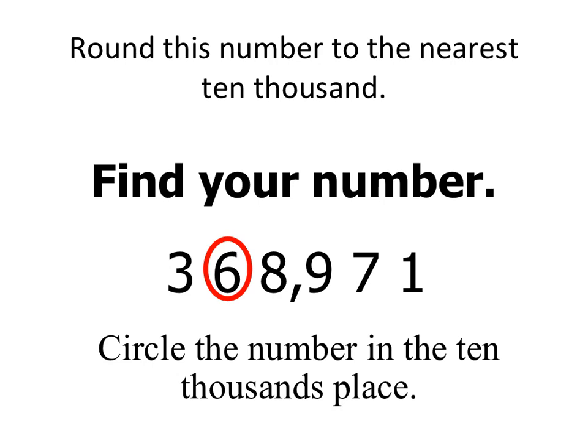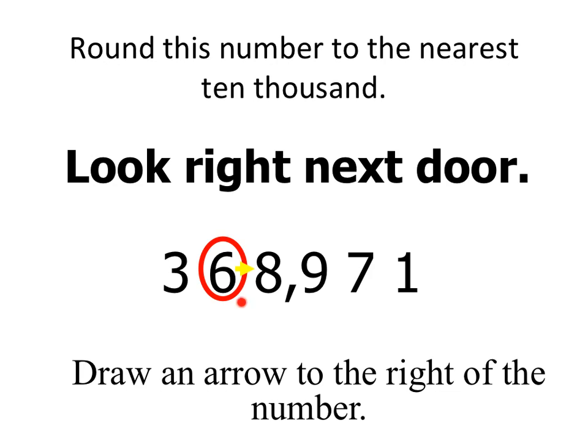Let's try one now. Let's round this number to the nearest 10,000. The number is 368,971. The first step is to find the 10,000th place, the 6, circled in red on this slide. Then look next door. Next door to that 6 is an 8.